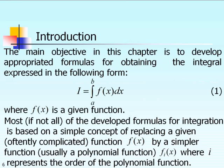Suppose we want to integrate any complicated function f between the limits from a to b, as indicated in equation 1. Now, f of x is a given function. If the function is too complicated to be done analytically, then the numerical approximation approach replaces this complicated function f of x by some simpler function — usually in the form of a polynomial function f sub i, where i indicates the degree or order of the polynomial.